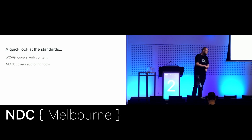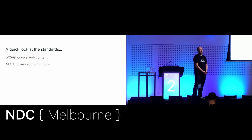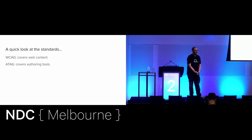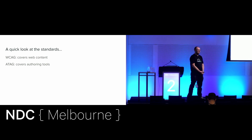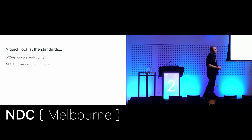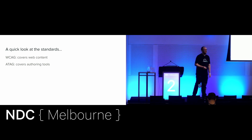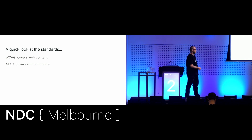If you're building a commenting system where people can write their comments - and this is what I encountered just the other day - you better make sure that your editor doesn't tab-lock users. Users could focus it and could not exit because tab just added tab characters, shift-tab added tab characters, control-tab added tab characters. You get in there, you're stuck. Without a mouse, you could not exit that field. That's a huge issue.